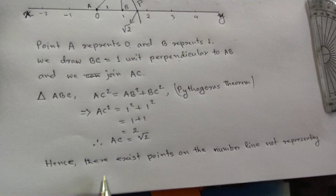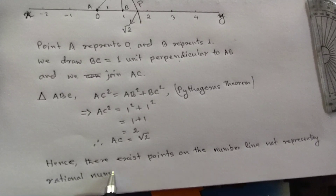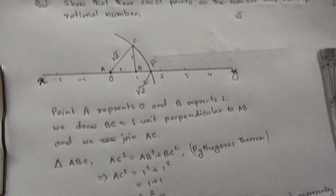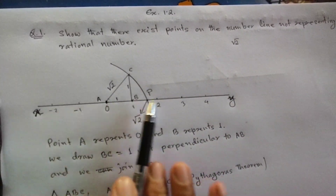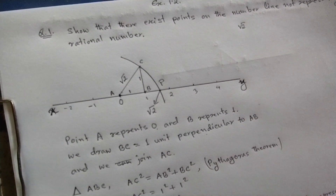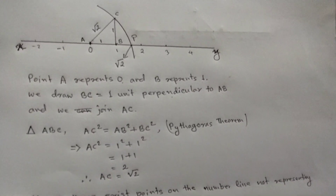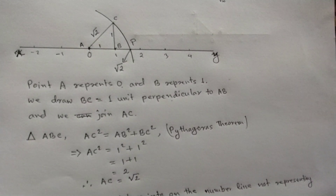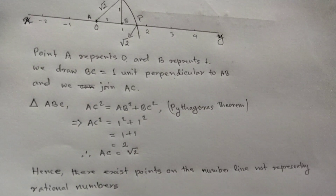Now we know the irrational number. The irrational number root 2 is represented on the number line. Root 2 is an irrational number — root 2 represents Exercise 1.2, question number 1. If you like this, you can like, subscribe and share the video.